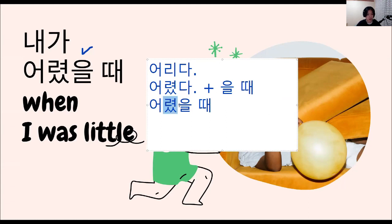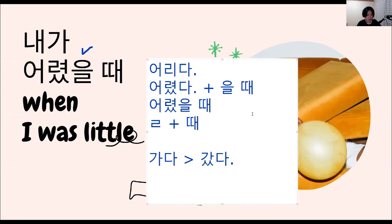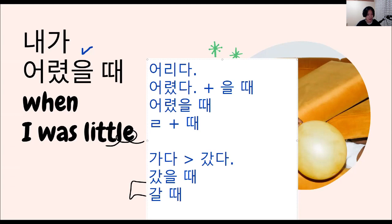If the stem has a 받침, you put 을 때. If it doesn't, you add the ㄹ 받침 and then put 때. For example, let's use the verb 가다. If you change 가다 to past tense, that is 갔다. Remove the 다 — you get 갔을 때. But if it's the present tense, it will be 갈 때, because the stem is 가, and we add the ㄹ sound 받침 plus 때: 갈 때.